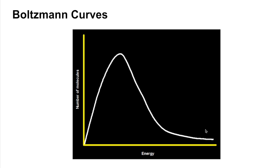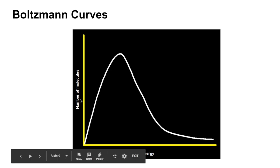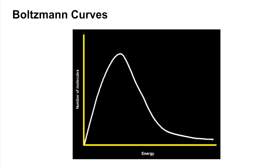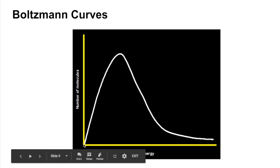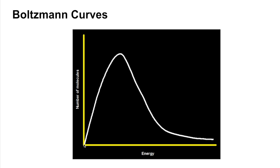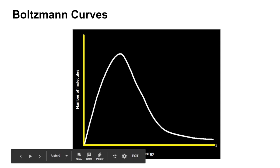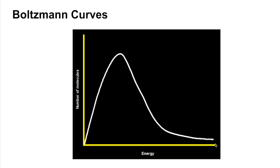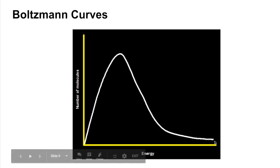We'll finish with Boltzmann curves. The y-axis is the number of molecules and the x-axis is energy. A couple of really important points: the graph must start at the origin because no particles have zero energy, and at the high energy part of the x-axis you must not cross the axis — because that would imply an absolute maximum energy, whereas there could always be one random particle with slightly more energy.